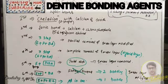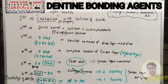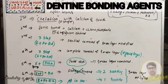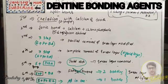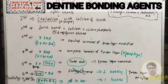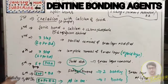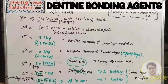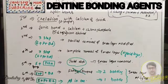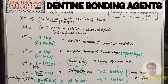That was all about dentin bonding agent. We discussed the smear layer, hybrid layer, the bonding mechanism, various generations, the total etch technique, and the selective etch technique. The confusing part of dentin bonding agents is the generations, and I hope I made it very clear. The smear layer, hybrid layer, and how things differ between dentin and enamel are key concepts. I'll come with a new topic in dentistry and more - thank you.